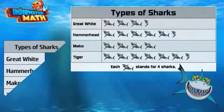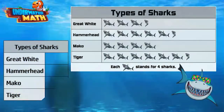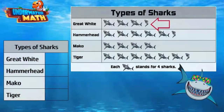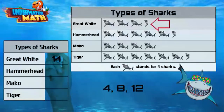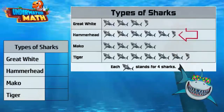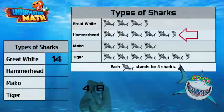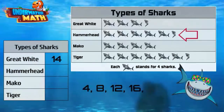Anyhow, let's look at what we've got in this pictograph. There are three whole shark pictures and one half shark picture by the great white. If we count by fours, we have four, eight, twelve, then two more for the half shark, so that's 14 great white sharks.